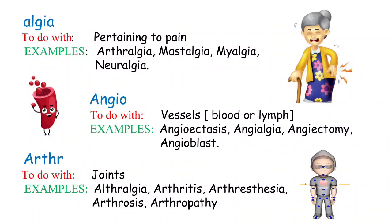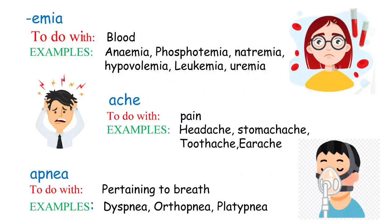The next term is 'emia,' which relates to blood. Common examples include anemia — lack of RBCs or hemoglobin in the blood; phosphatemia — presence of phosphate ions in the blood; natremia — presence of sodium ions in the blood; hypovolemia — low volume of blood; leukemia — blood cancer; and uremia — presence of urea in the blood. Anemia is a very good example to remember this term.